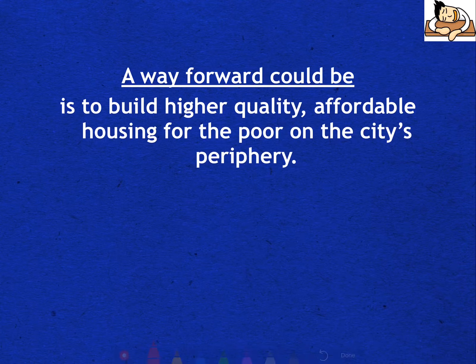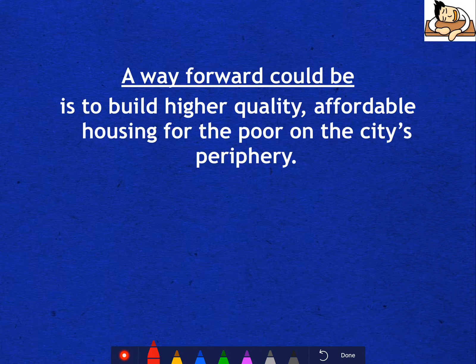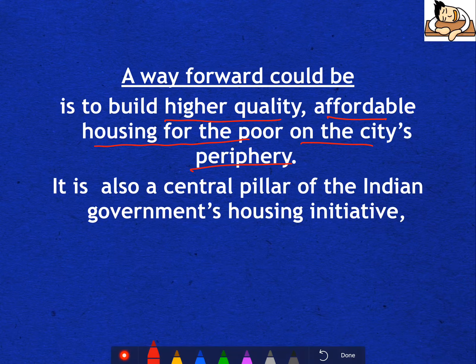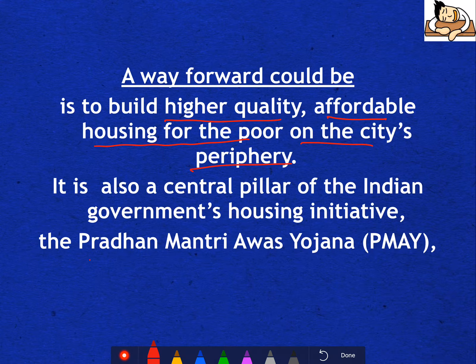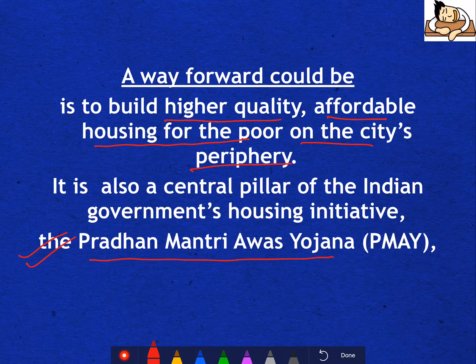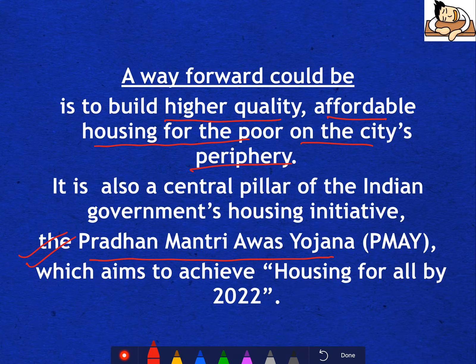As a way forward, provide higher quality affordable housing for the poor on the city's periphery. The government has started the Pradhan Mantri Awas Yojana, which can be utilized to make affordable housing especially on the city's periphery, and you can actually achieve housing for all by 2022. In the way forward, try to quote as many government schemes as you can.